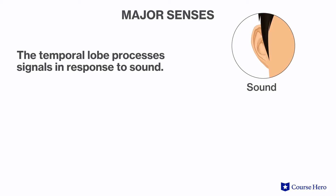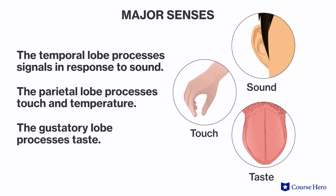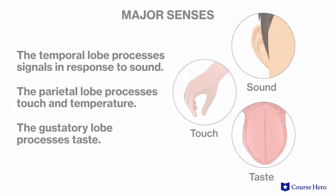Other senses follow a similar path. Signals in response to sound are sent to the temporal lobe. The parietal lobe processes touch and temperature, and the gustatory cortex processes taste.